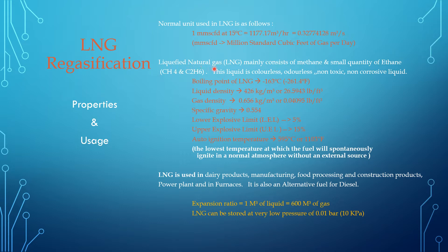LNG — liquefied natural gas — mainly consists of methane (CH4) and a small quantity of ethane (C2H6). This liquid is colorless, odorless, non-toxic, and non-corrosive.